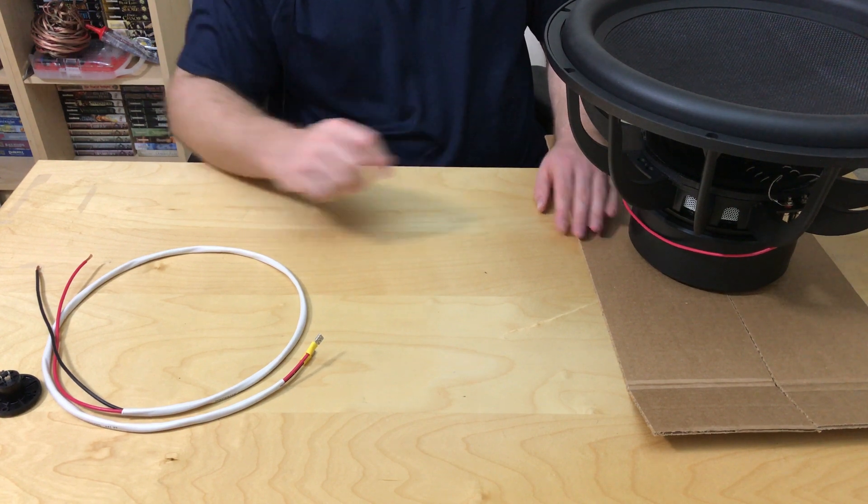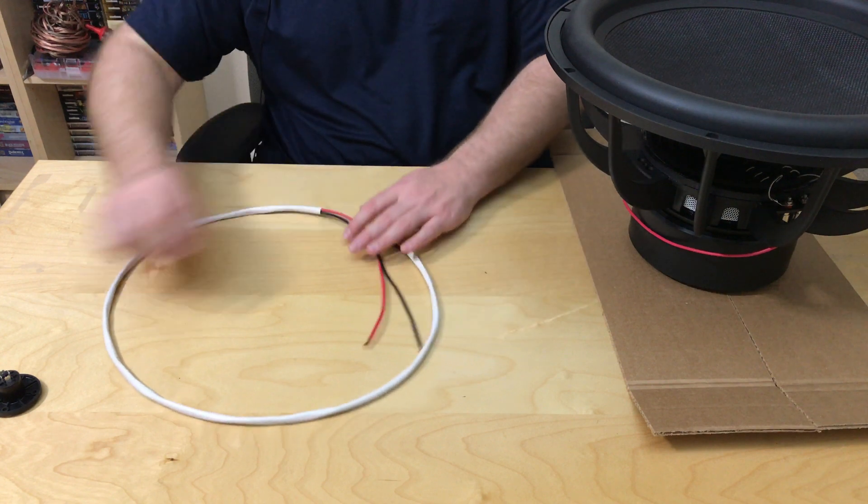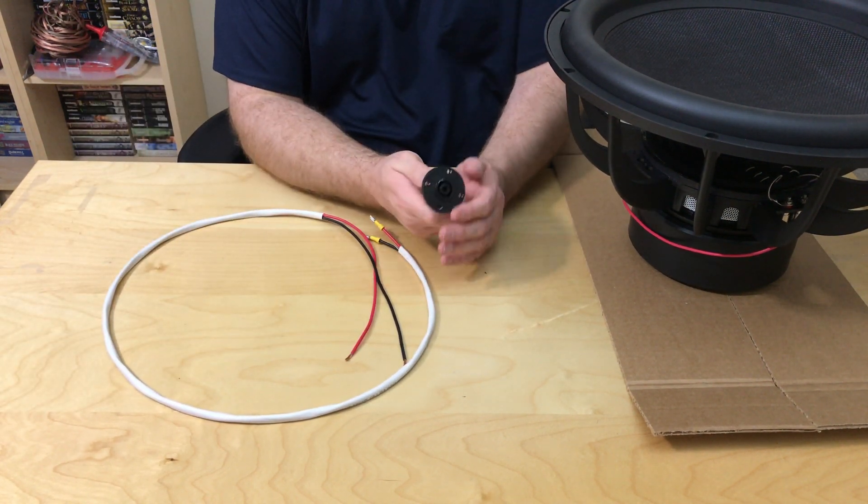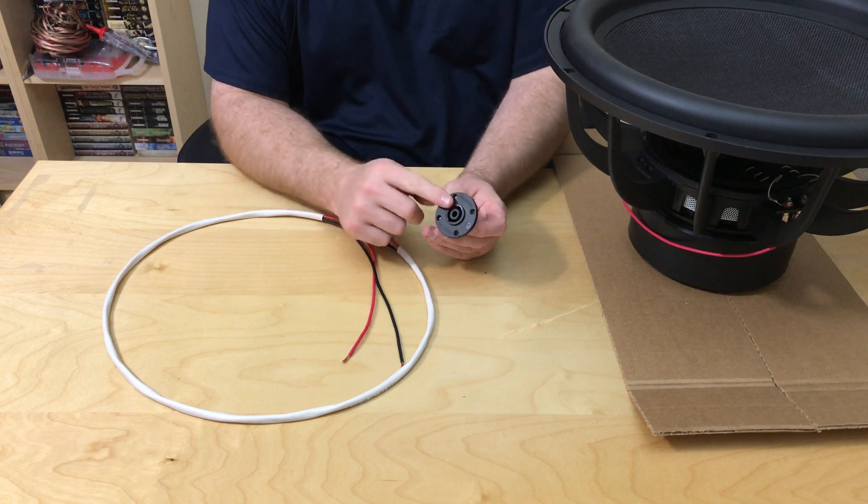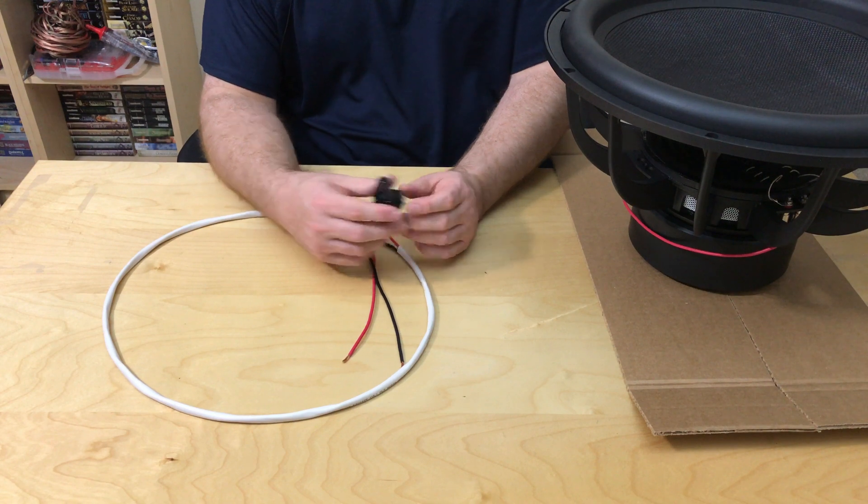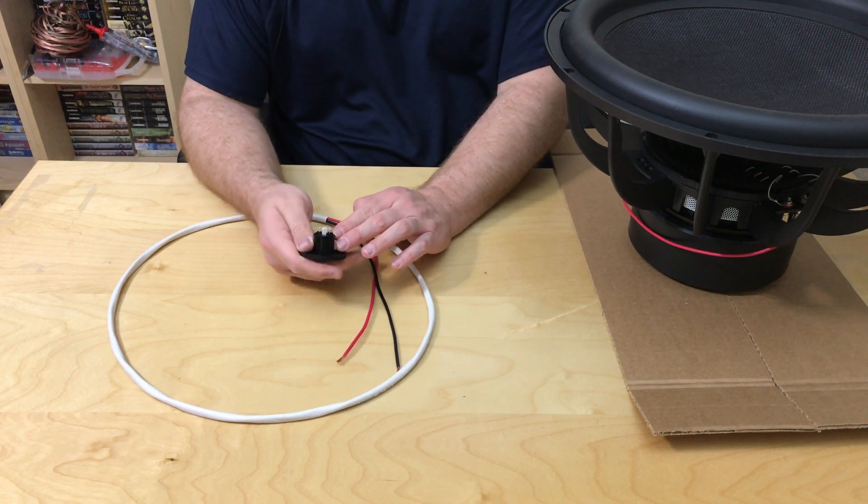So we're going to walk through what this would look like in a DIY subwoofer environment. In a lot of environments, you're going to see people use Speakon connectors. So you might see this in the back of a custom subwoofer cabinet. It can be sealed or ported. And what you'll have is a positive 1 and a negative 1.